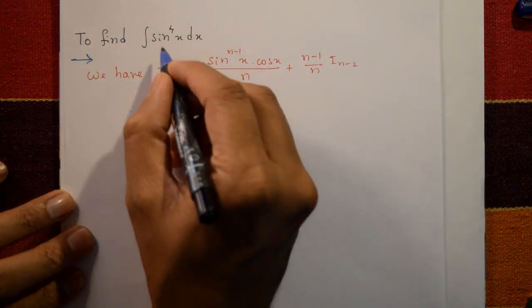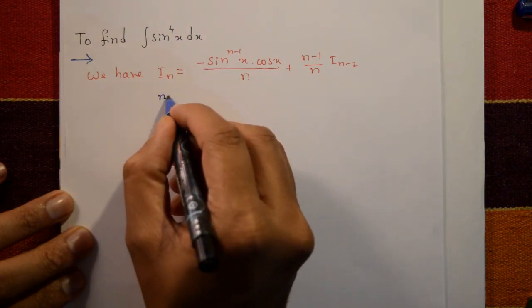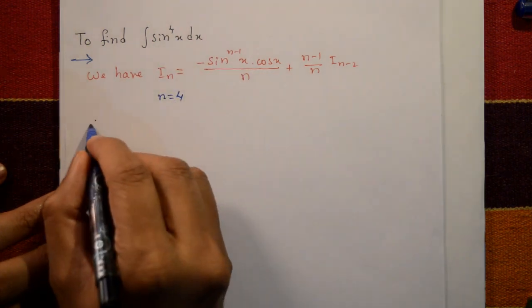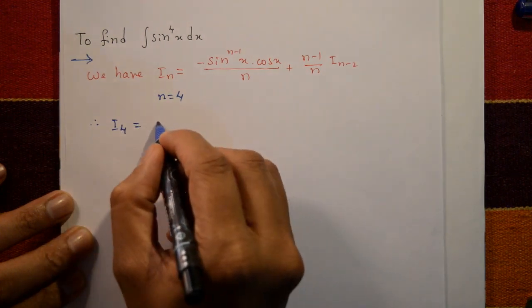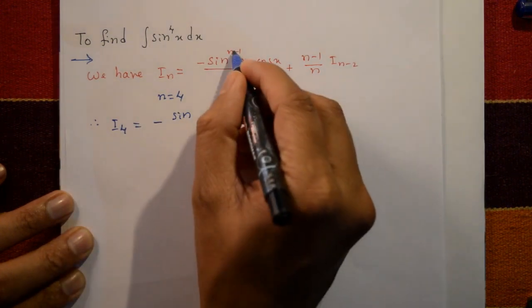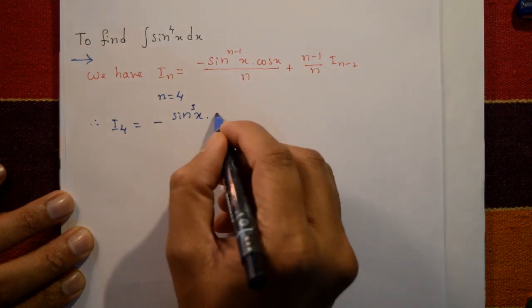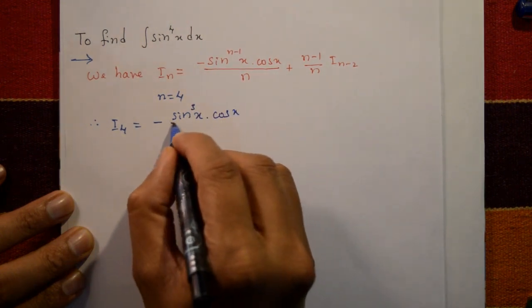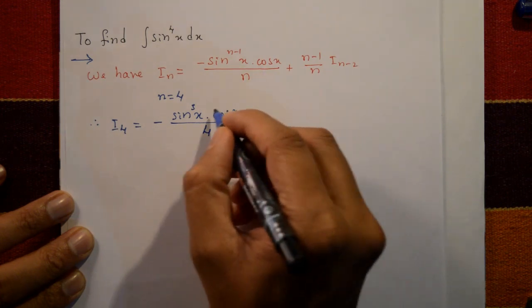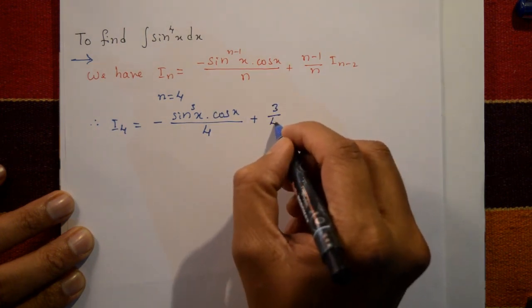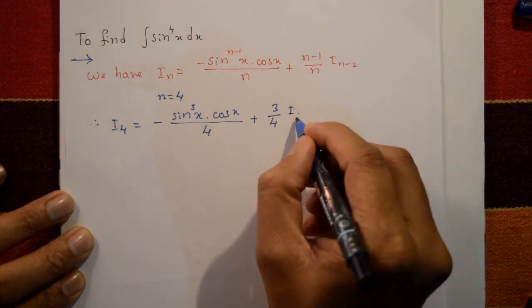Now put n = 4. That means I₄ = minus sin^(4-1)x · cos x divided by 4, plus (4-1)/4 · I_(4-2), which is (3/4) · I₂.